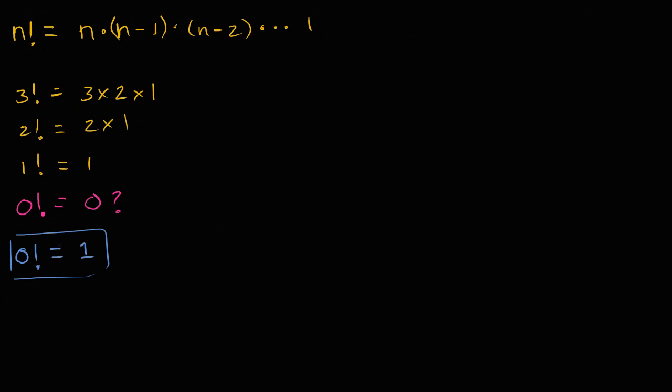So let's review a little bit. We've said that if we have n things and we want to figure out the number of ways to permute them into k spaces, it's going to be n factorial over n minus k factorial.